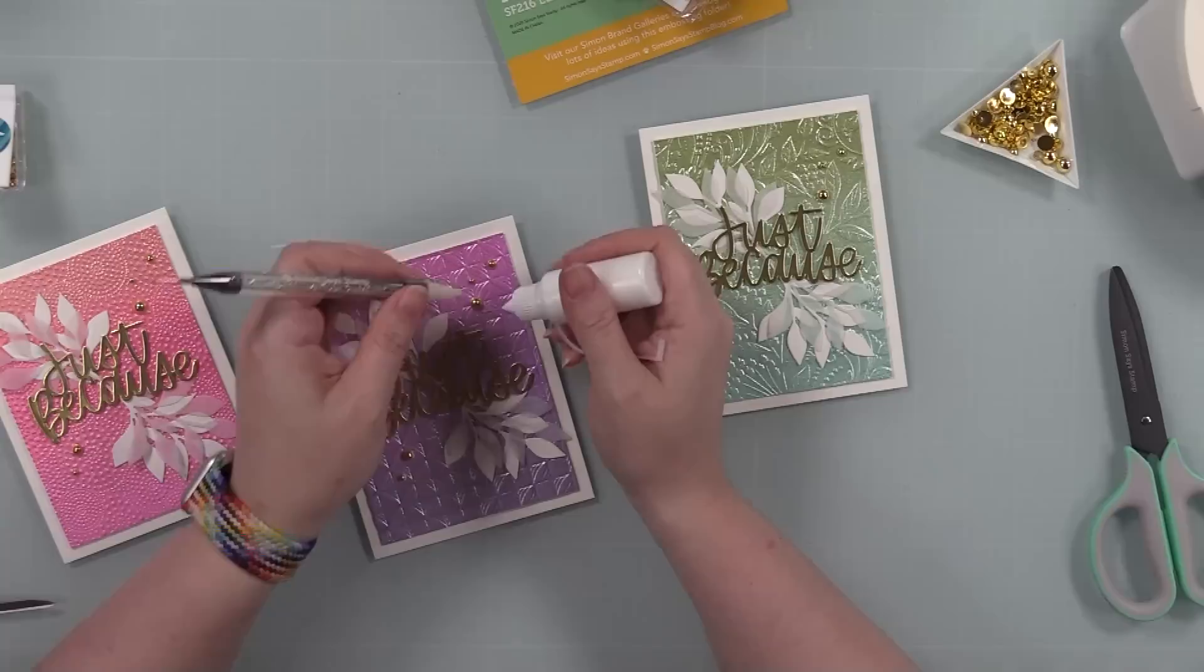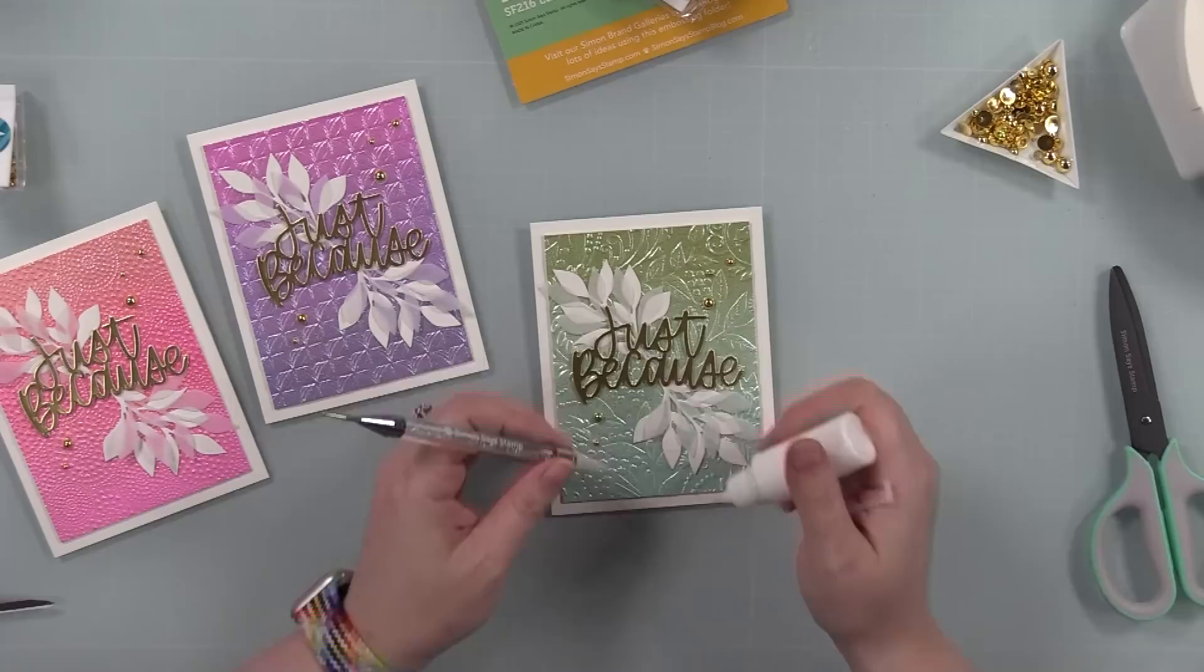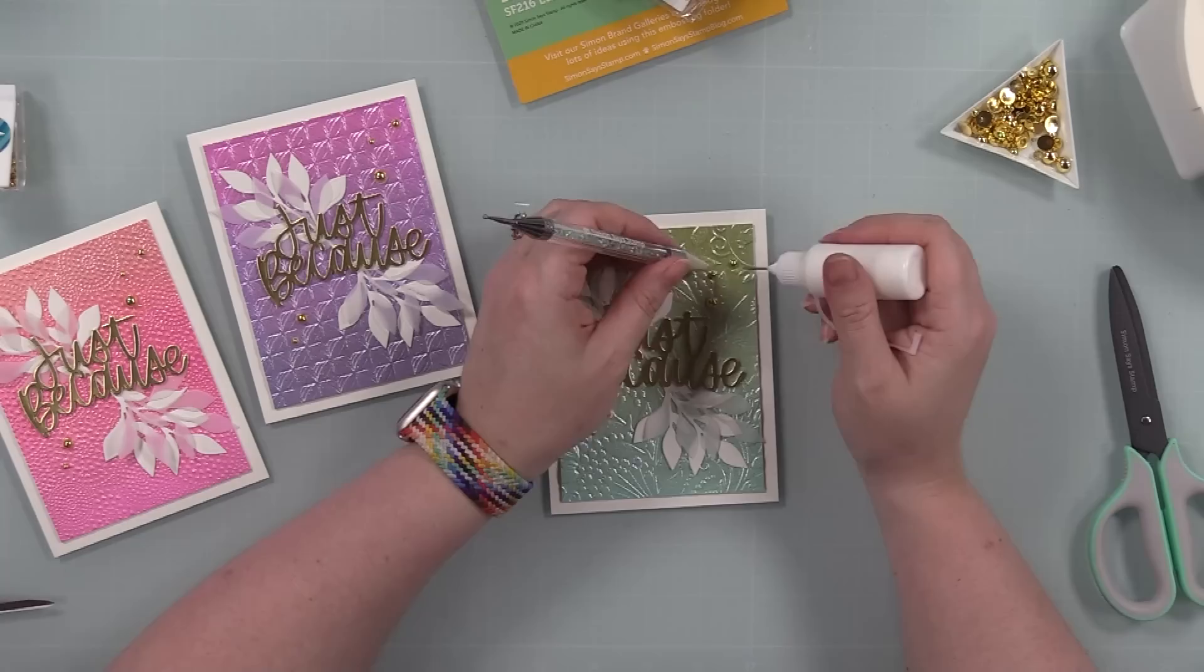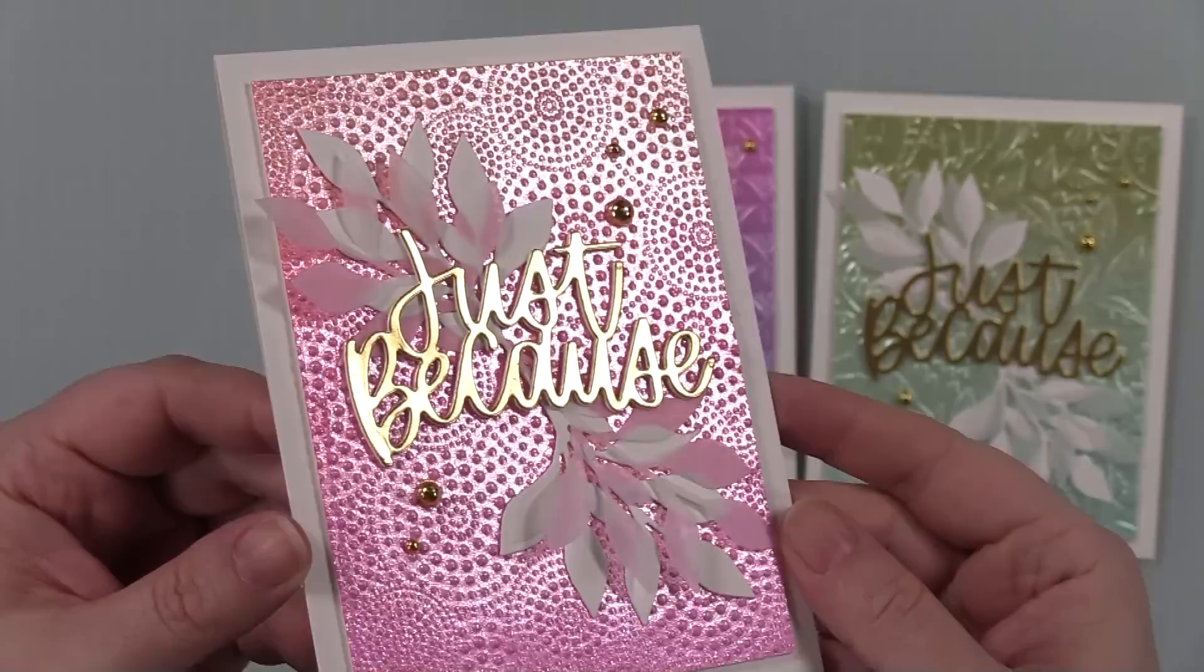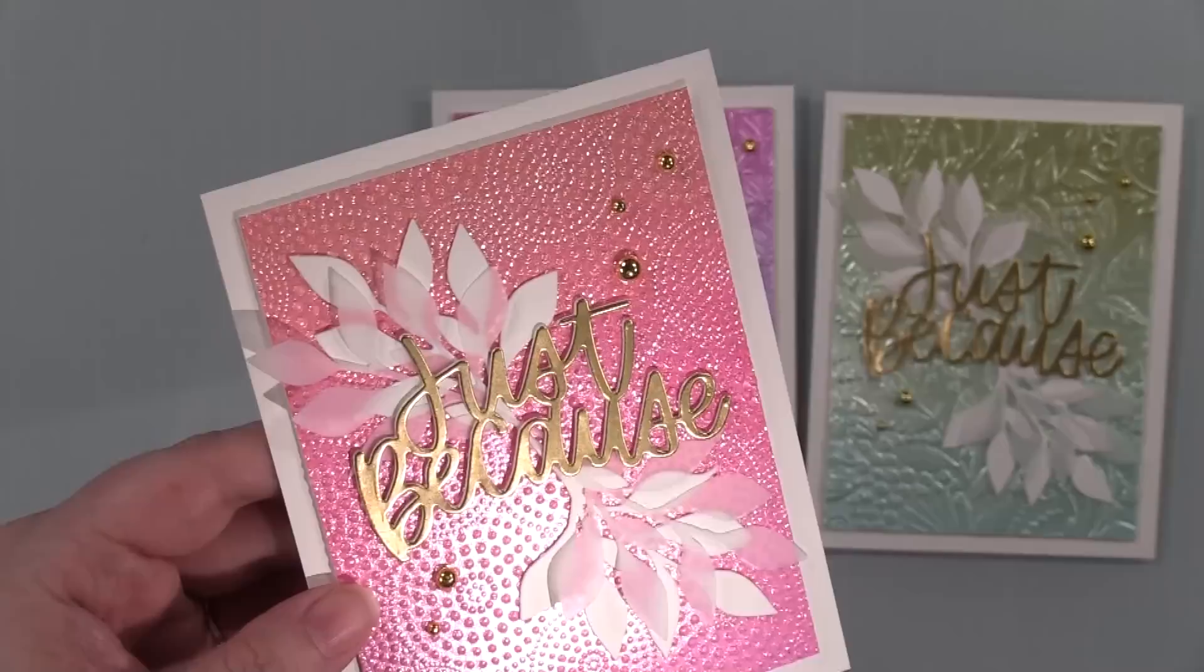Anyway, after I got those adhered, I kept the rest of the bling simple because, again, the backgrounds are the focus. So I'm just using some Trinity Stamps gold baubles just to tie it in with the sentiment. Put those around the sentiments on the cards, adhered them into place with little dabs of Craft Tacky Glue. Once those are adhered, these cards are complete.